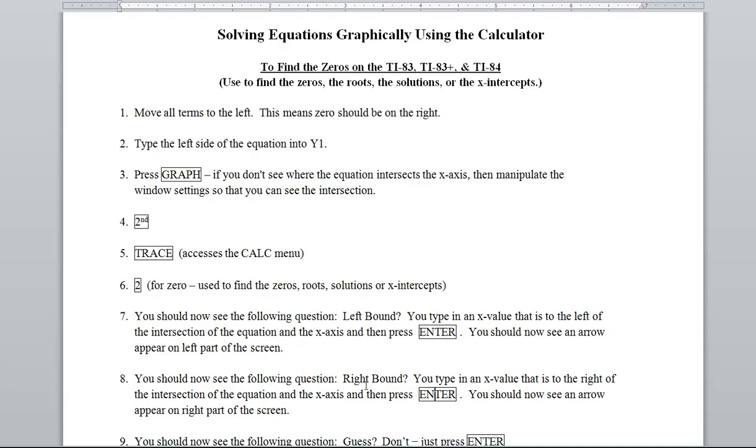Another question pops up: right bound. You type in an x value that's to the right of that intersection of the equation and the x-axis that you're after and then press enter. You see another arrow appear.